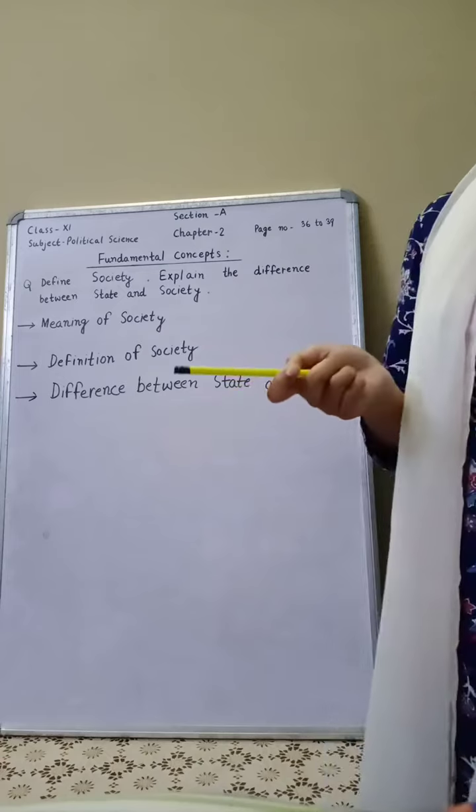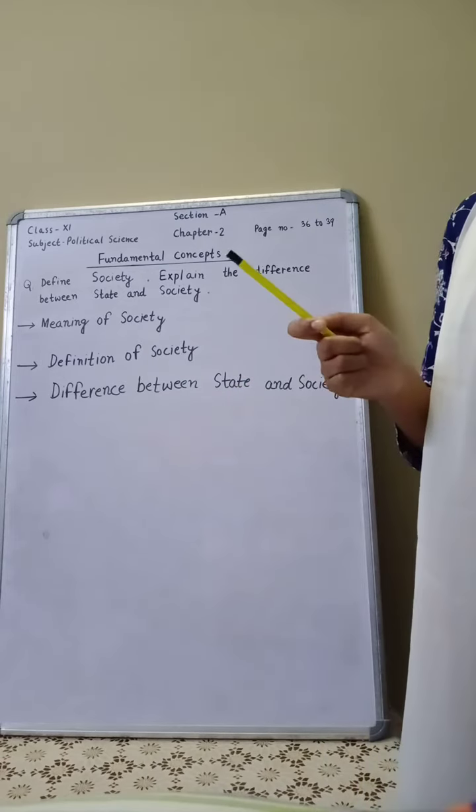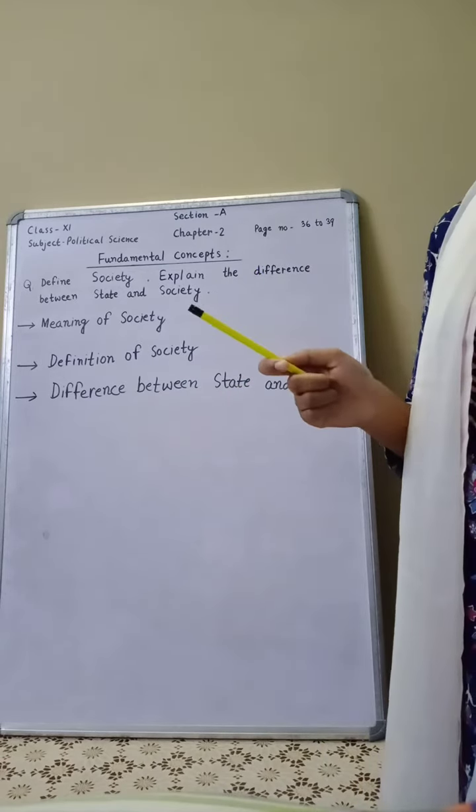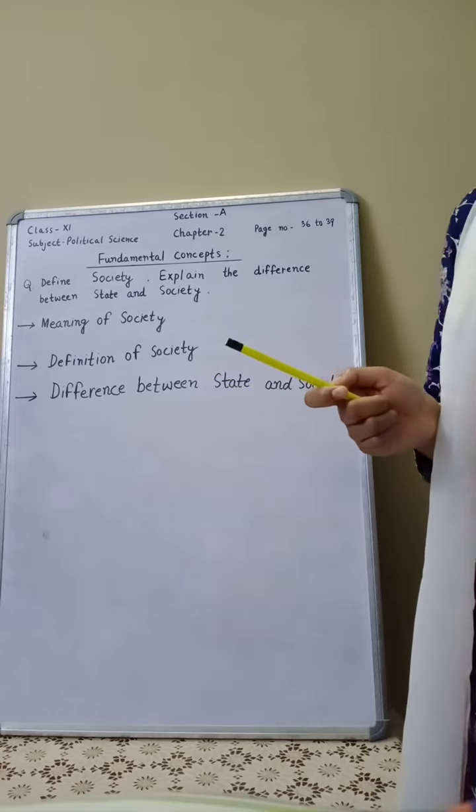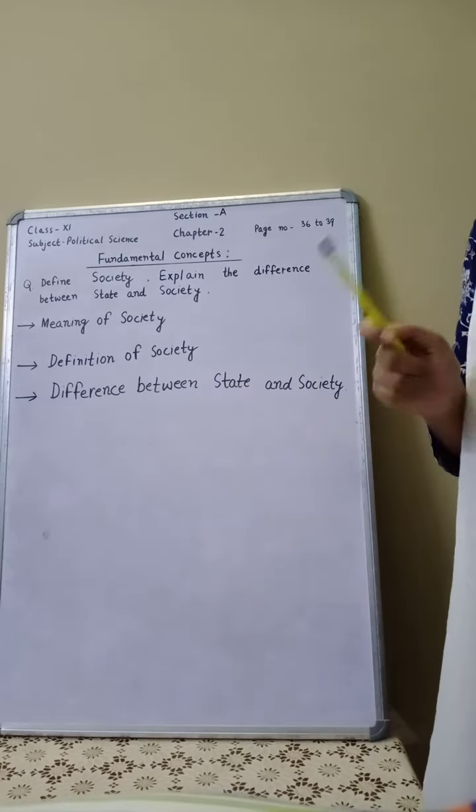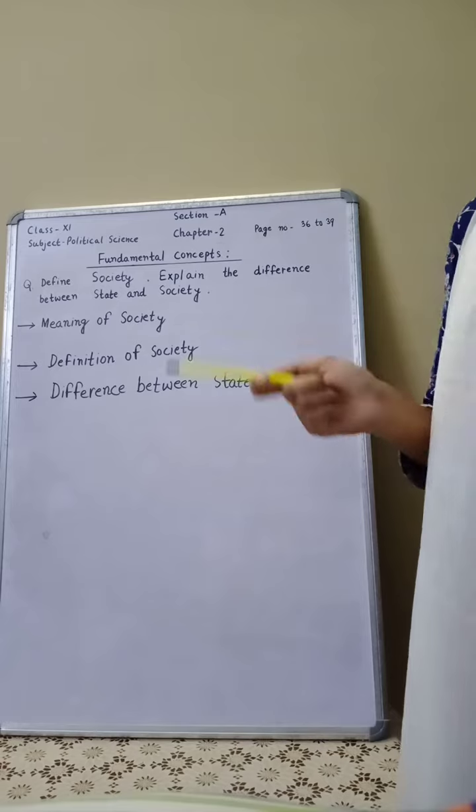Then third difference is, sovereignty belongs to the state and not to society. Then fourth difference is, territory belongs to the state and not to the society.